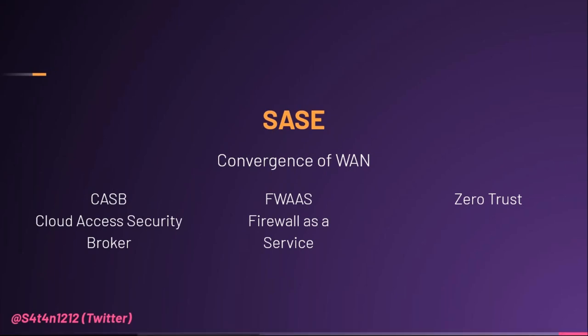Identities can be associated with people, groups of people, devices, applications, services, IoT systems, or edge computing locations. Gartner expects that by 2024, at least 40% of enterprises will have explicit strategies to adopt SASE, up from less than 1% at year-end 2018. A SASE architecture identifies users and devices, applies policy-based security, and delivers secure access to appropriate applications or data, allowing organizations to apply secure access no matter where users, applications, or devices are located.